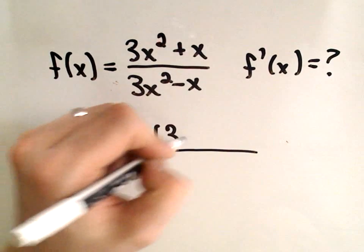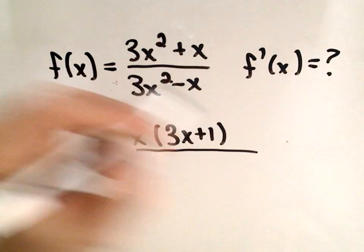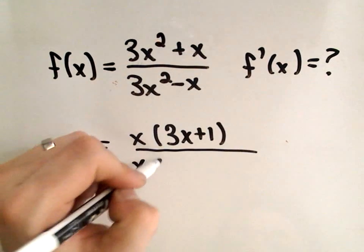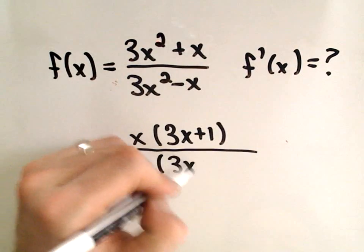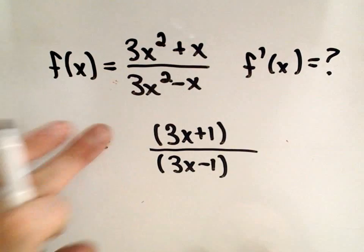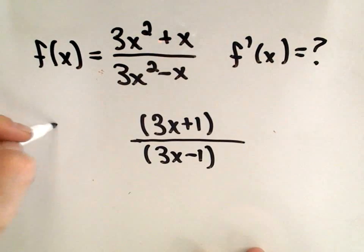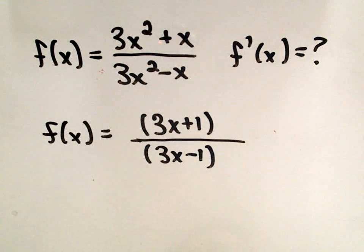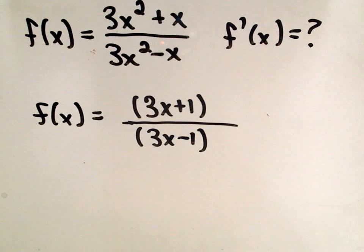And then I would need 3x plus 1 left over. Likewise, I can factor an x out of the bottom and have 3x minus 1 left over. Then I can just cancel out the x's, so really I'm just taking the derivative of the function 3x plus 1 over 3x minus 1, and I think it'll just make the computations much easier.